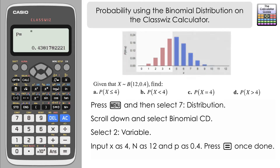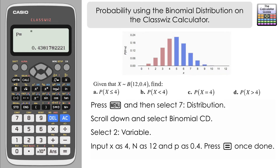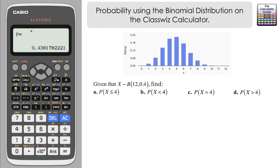We can see that shown on the diagram — that's all the probabilities up to and including 4. So let's move on to part B. This time we've got to find the probability that X is less than 4. The probability of X less than 4 means it's the same as the probability of X being less than or equal to 3.